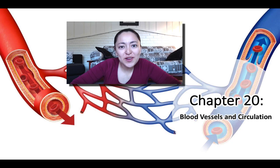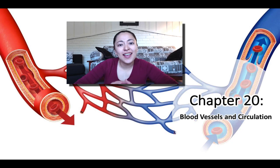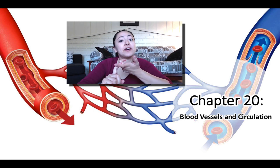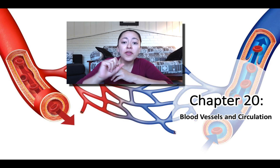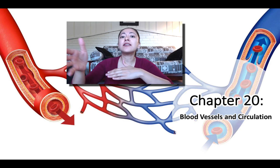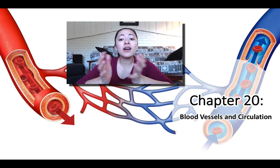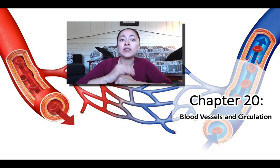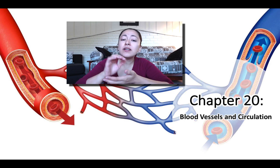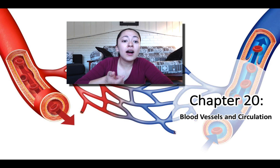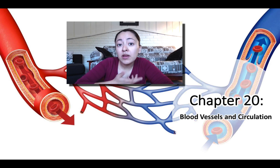Hello, in this video I will cover the blood vessels. We have three main types of blood vessels in our bodies: arteries, capillaries, and veins. I will talk about the main types of arteries, capillaries, and veins inside your body, and summarize how these three vessel types differ from each other. Please write down any questions as you watch and comment below, email me, or ask during our next class.